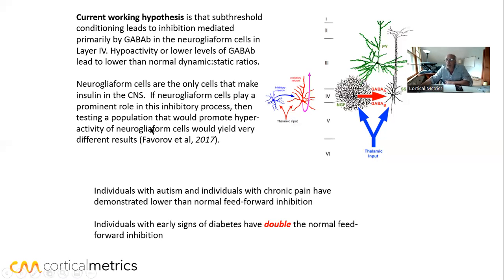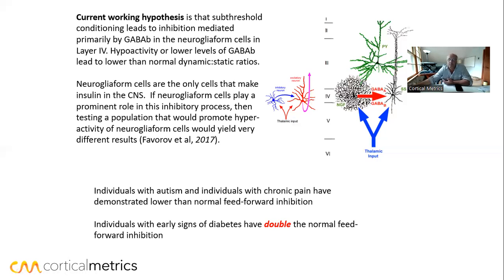Neurogliaform cells are actually the only cells in the brain that make insulin. A lot of people don't realize that insulin is made in the brain — the pancreas makes most of it, but for a long time people didn't realize the brain makes it too. So when you have cells in the brain that make insulin and play a huge role in the inhibitory process, you start to wonder: what happens in a population that has an insulin problem? If you have deficient insulin in the brain, those neurogliaform cells will probably become hyperactive because they're trying to produce more insulin.